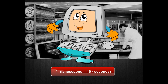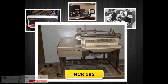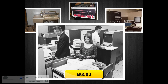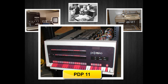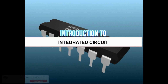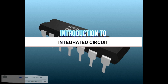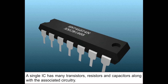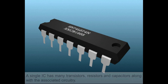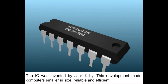Examples of third generation computers include NCR 395, B6500, IBM 370, and PDP 11. The third generation of computers is marked by the use of integrated circuits. In place of transistors, a single IC has many transistors, resistors, and capacitors along with the associated circuitry. The IC was invented by Jack Kilby. This development made computers smaller in size, reliable, and efficient.